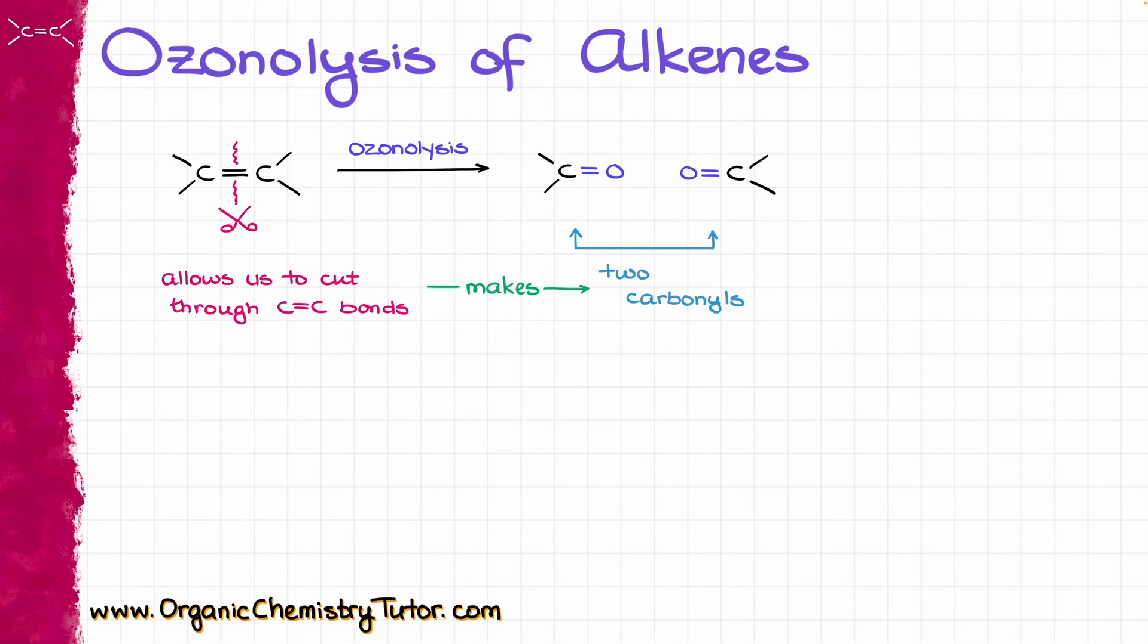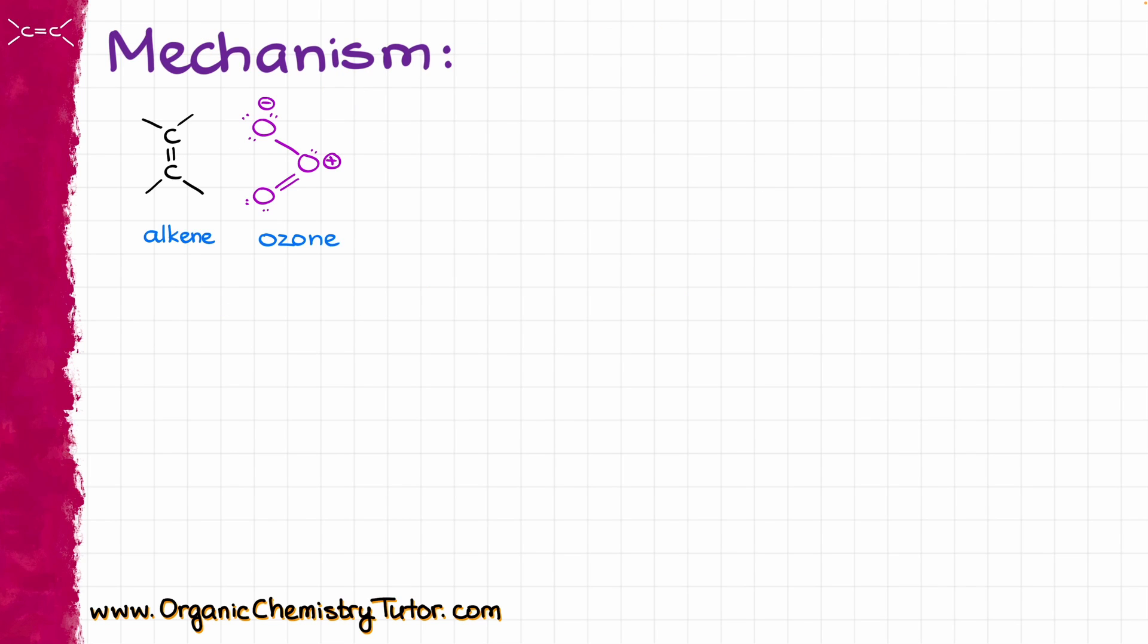Ozonolysis of alkenes is the major synthetic approach we are going to use when we need to cut through the carbon-carbon bonds. And while this reaction has a rather complex mechanism, there is a simple trick I am going to show you that will allow you to draw the ozonolysis products easily from the first attempt every single time. But before we jump into any tricks, let's take a proper look at the mechanism of the ozonolysis.